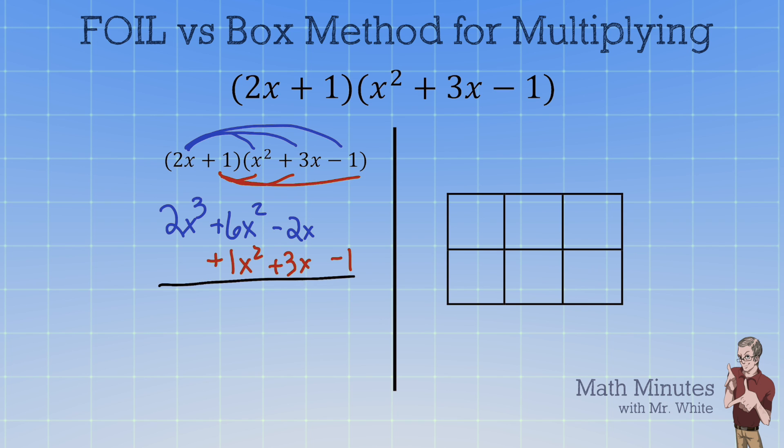Notice how I lined everything up relatively well here and I can now add the like terms. 2x³ + 7x² + 1x - 1. There's the polynomial answer for multiplying this binomial times the trinomial.